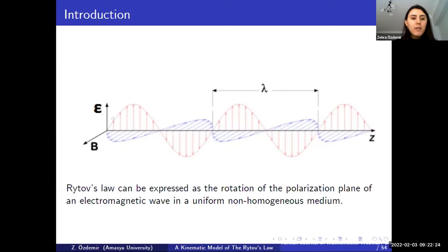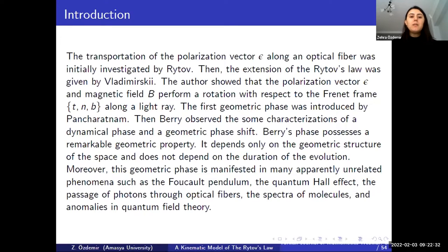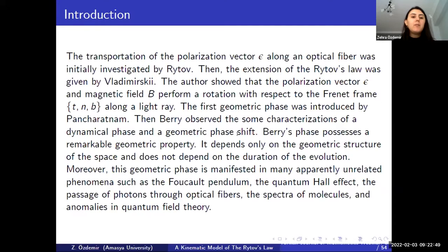The red curve shown is the Rytov curve, and this law is called Rytov's law. The transportation of the polarization vector E along an optical fiber was initially investigated by Rytov. Then the extension of Rytov's law was given by Vladimirsky. The author showed that the polarization vector E and magnetic field B perform rotations with respect to the Frenet frame T, N, and B along a light ray.